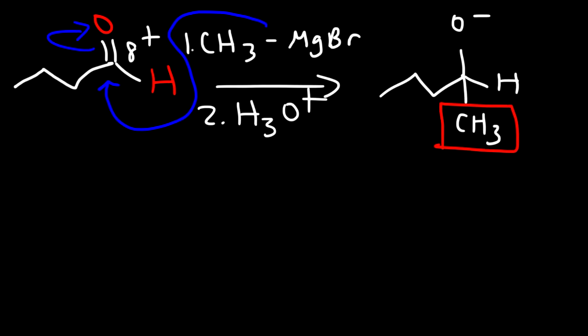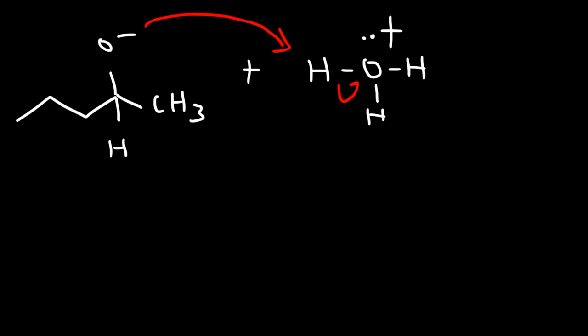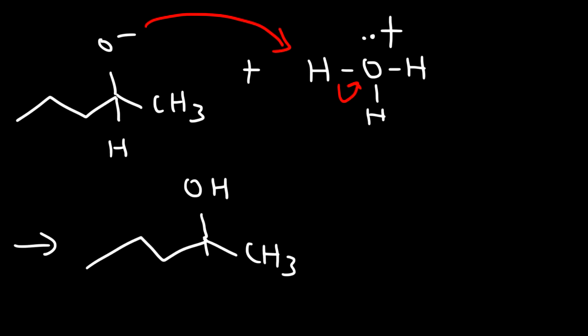In the next step, the oxygen with a negative charge is going to receive a proton from the hydronium ion. It grabs a hydrogen, turning the product into a secondary alcohol. This is the major product for this reaction.